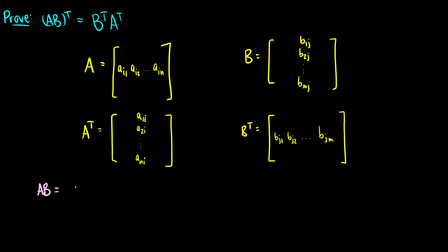So this AB is going to be A_i1 times B_1j plus A_i2 times B_2j, and all the way up to A_in times B_nj.